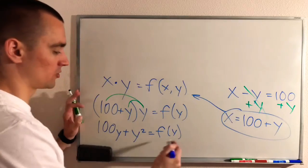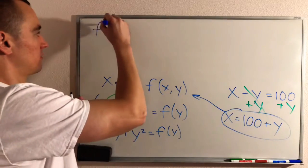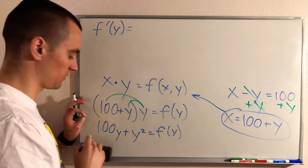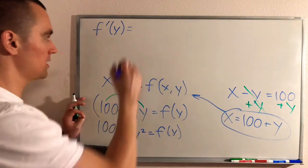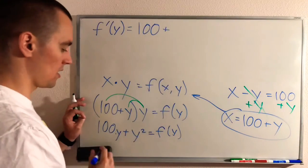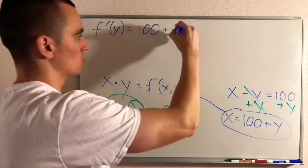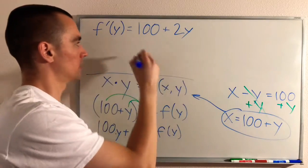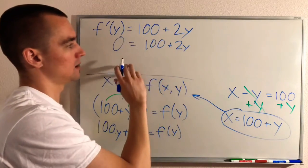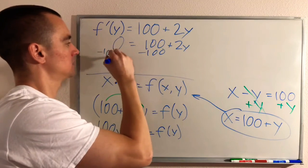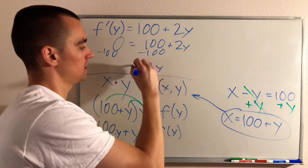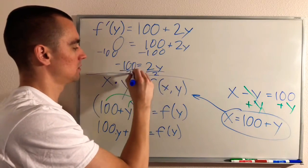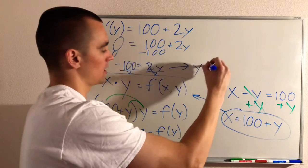The derivative of f — remember y is the variable here — we apply the power rule. The derivative of 100y is 100, and the derivative of y² brings the two down and lowers the power by one, giving 2y. So f'(y) = 100 + 2y. Setting this equal to zero and solving: subtract 100 from both sides to get 2y = -100, then divide by 2 to get y = -50.